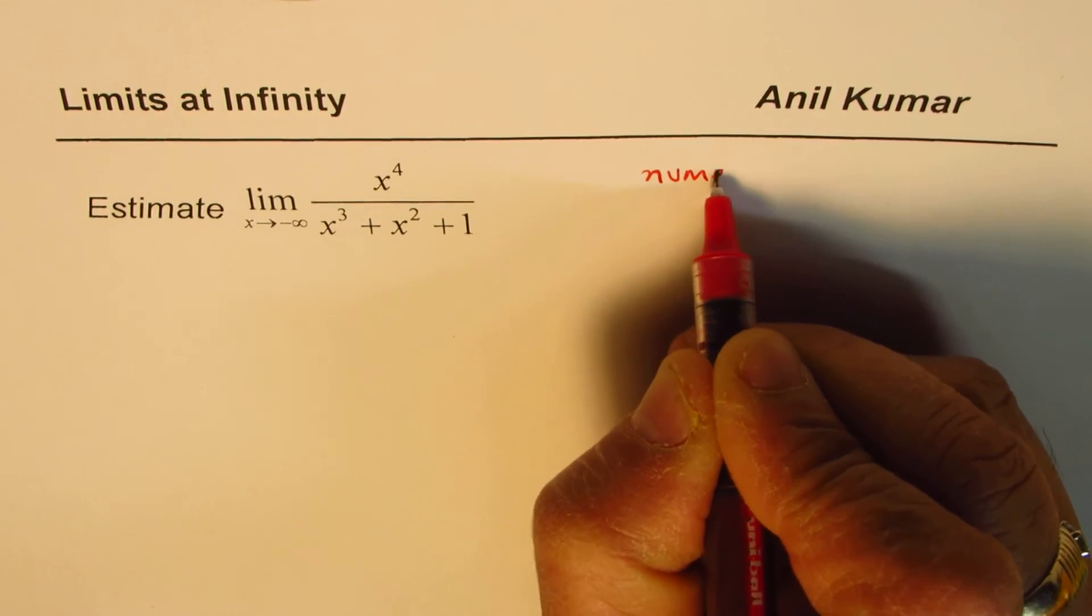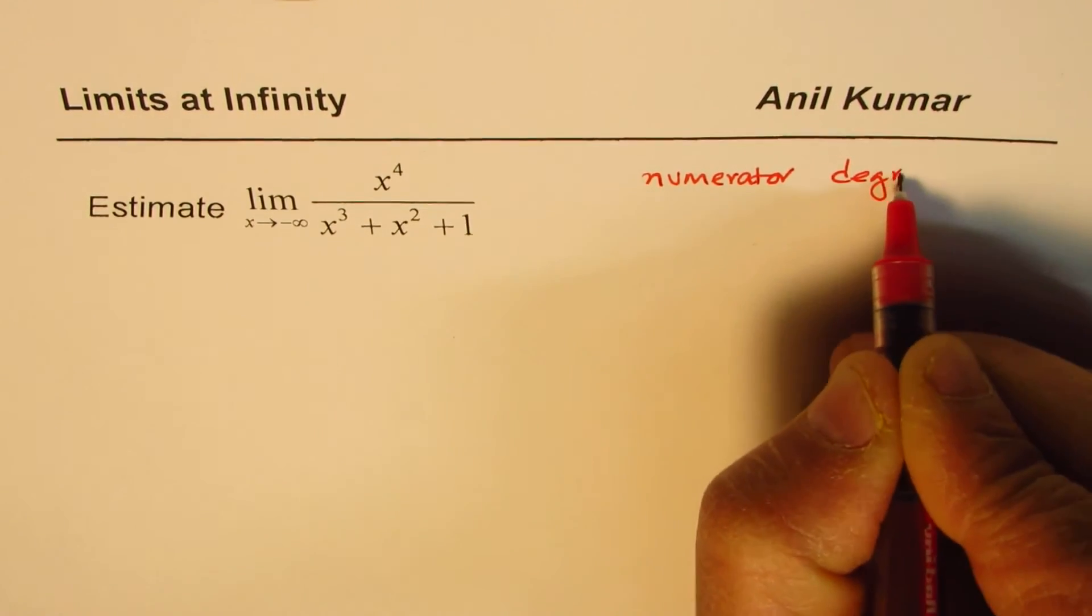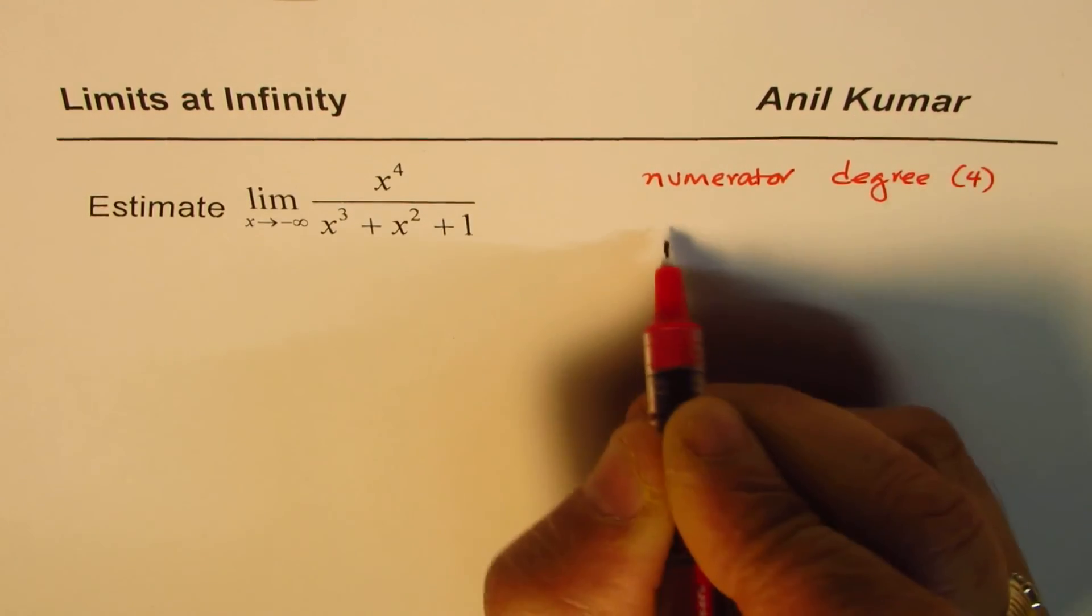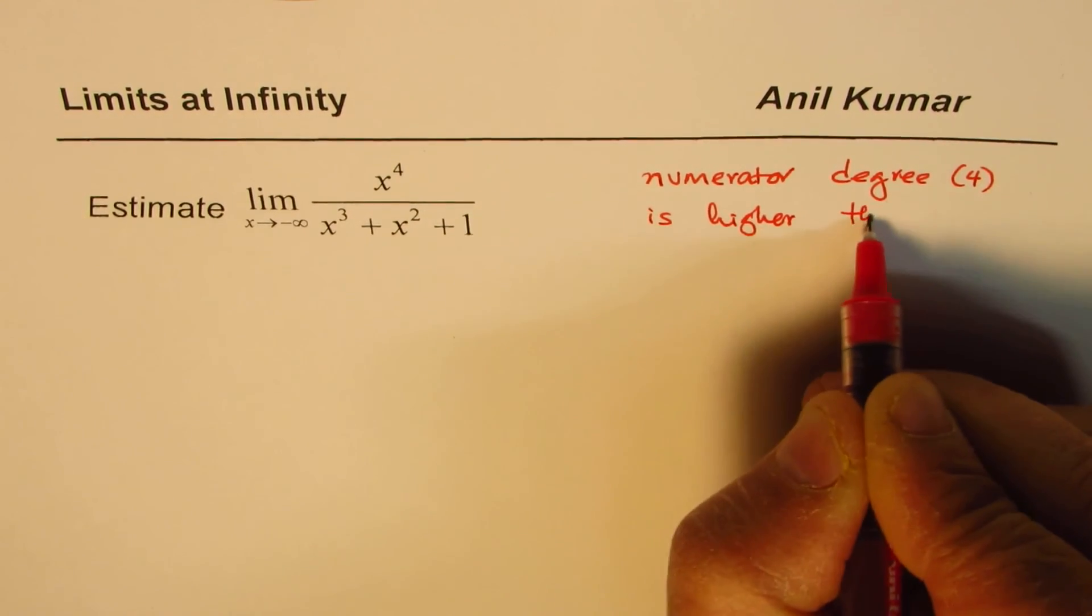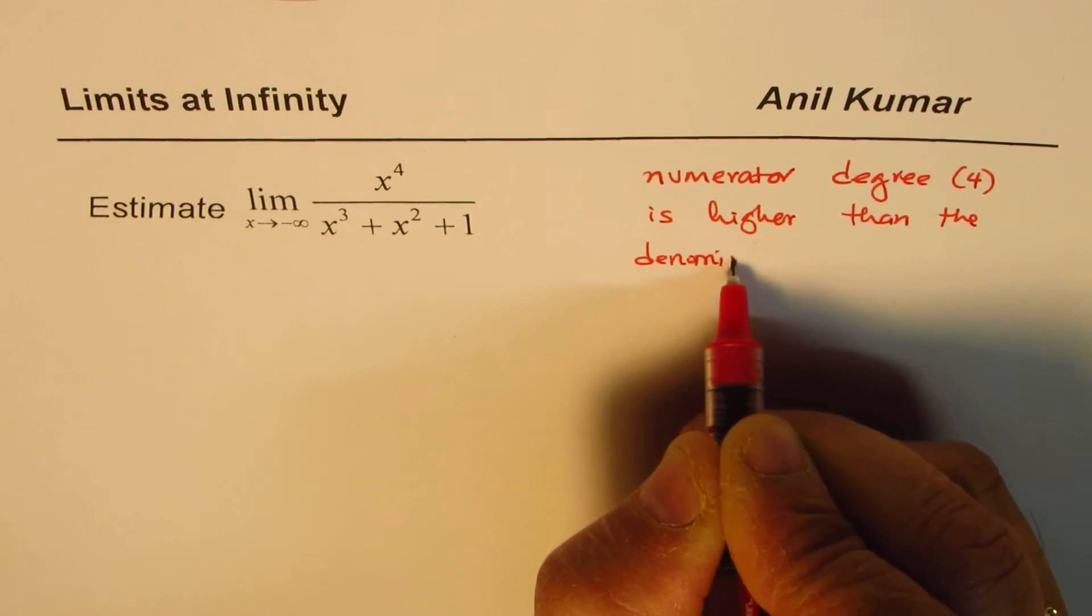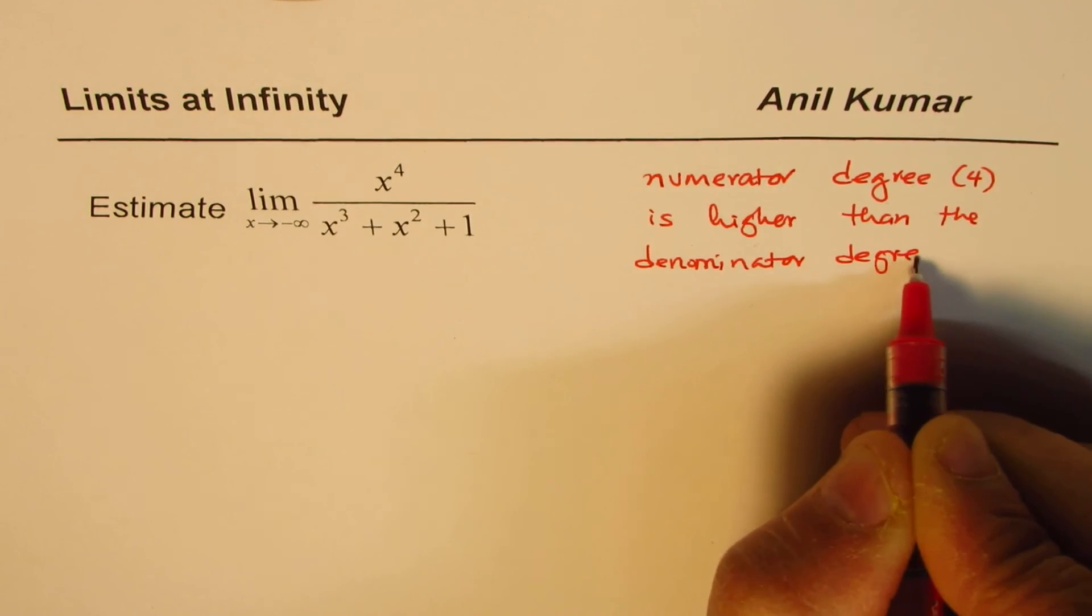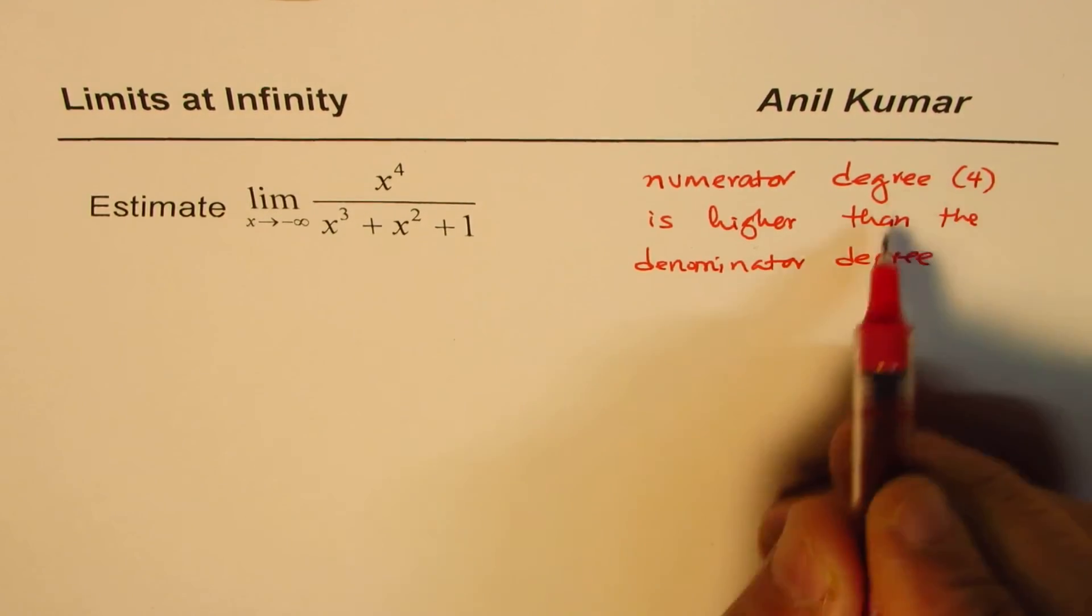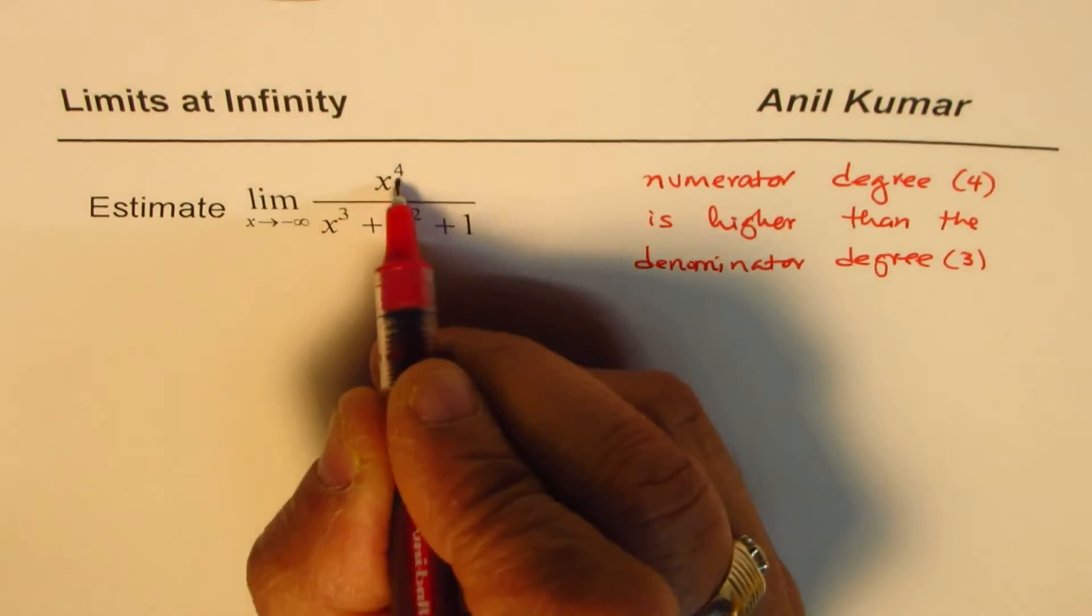So numerator degree, which is 4 in this case, is higher than the denominator degree. In rational functions, whenever that is the case, the denominator degree in this case is 3, the highest power of the polynomial.